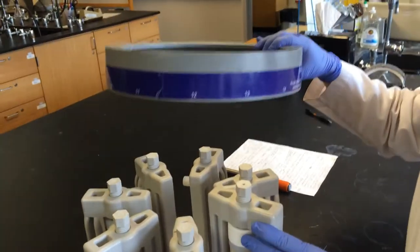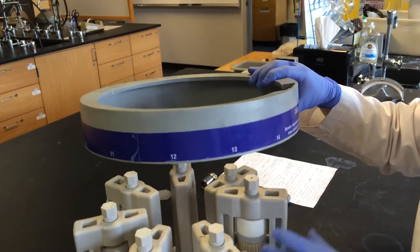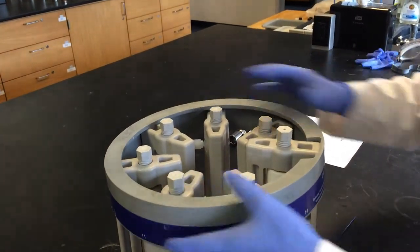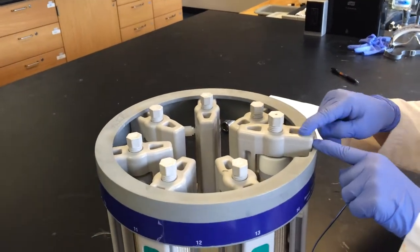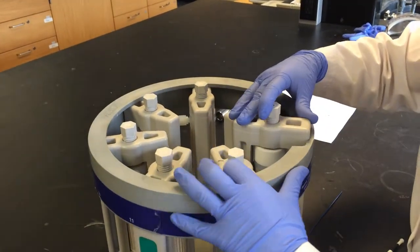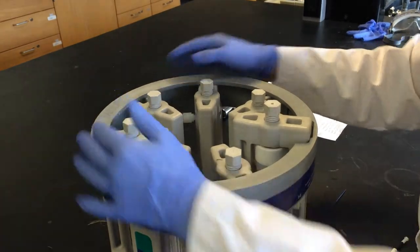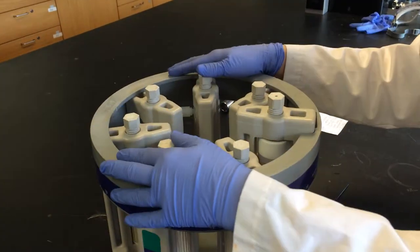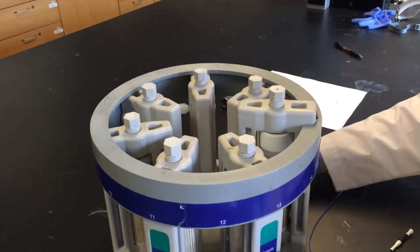Once all of the support modules are on the carousel, you place this ring over the tops of all of them. There is a small space for the control vessel. And then you turn it slightly so that it is touching the edge. And this holds all of the support modules in place.